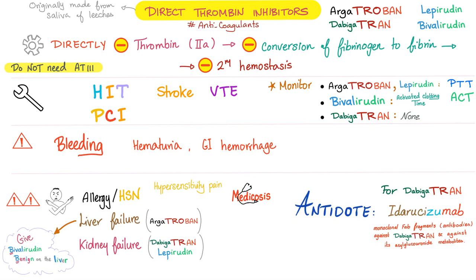The antidote for dabigatran is idarucizumab. If a drug name ends in '-mab,' it's a monoclonal antibody. If it has '-zu-,' it's a humanized monoclonal antibody. If it has '-ci-,' it's related to cardiovascular. Idarucizumab consists of monoclonal Fab fragments directed against dabigatran and its metabolites, namely the acylglucuronide.